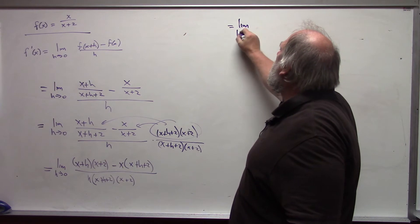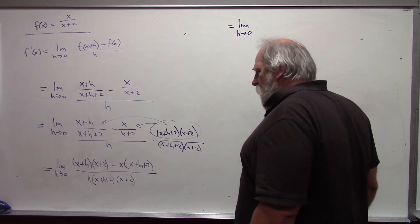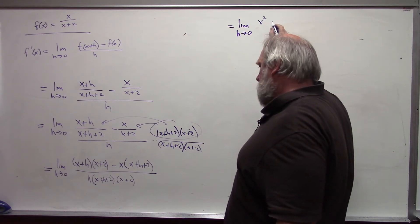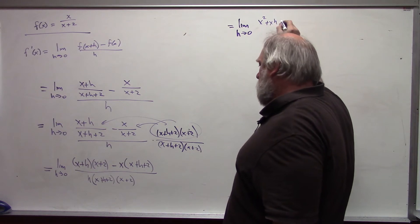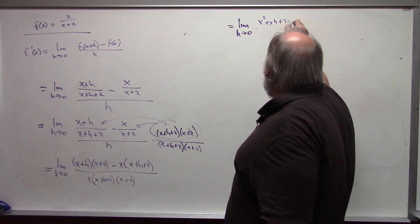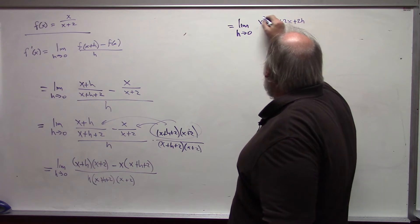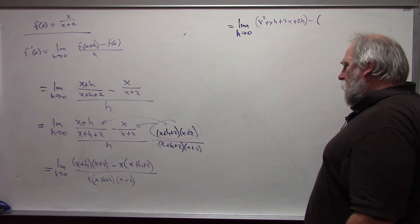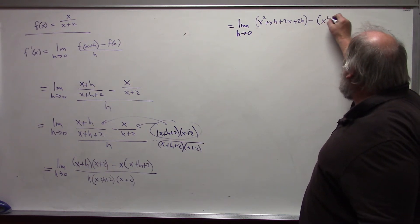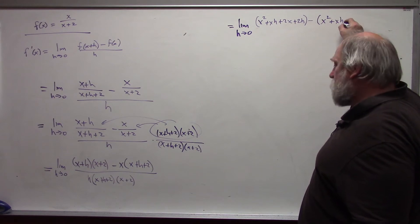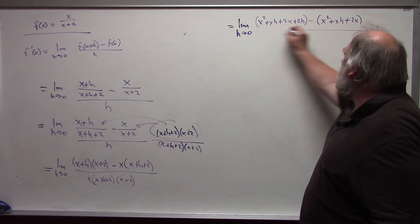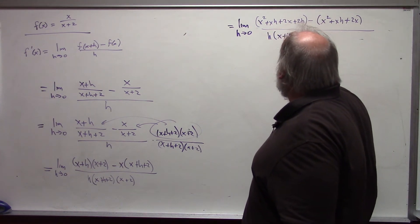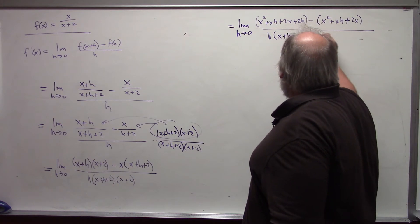That's why we had to do this. This then becomes, foiling out, x squared plus xh plus 2x plus 2h minus x squared plus xh plus 2x over h times x plus h plus 2 times x plus 2. Don't multiply that out.